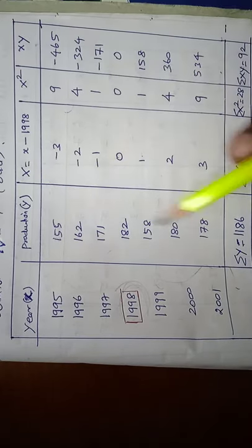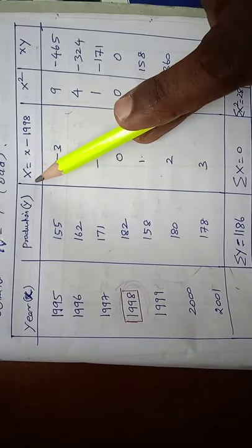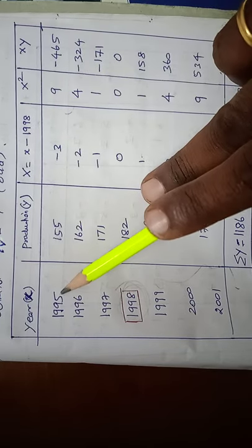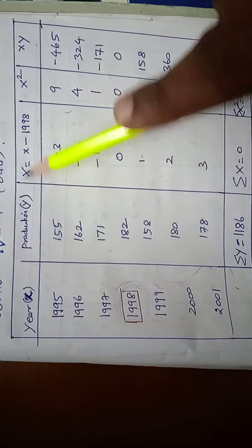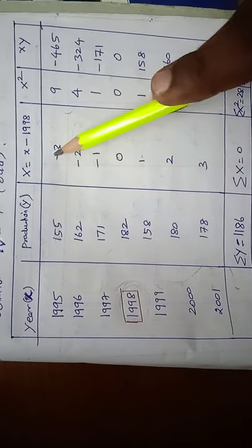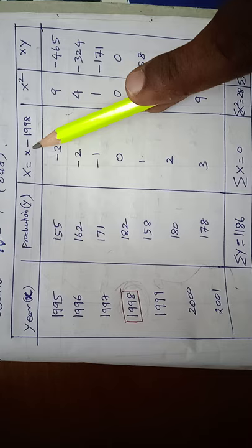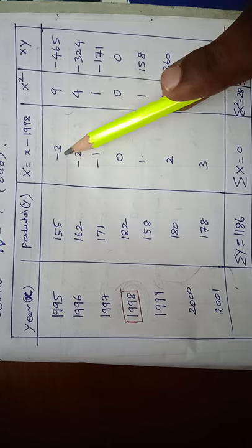The production value is already given. The computation of capital X can be taken as small x minus 1998. So small x can be taken as 1995 minus the middle year, 1998. So 1995 minus 1998 is minus 3.